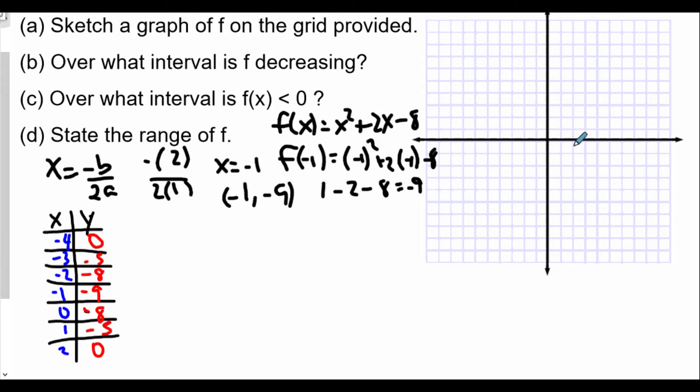Let's plot some points here. I'll use maybe blue. So when x equals -4, one, two, three, four, y is 0. When x is -3, y is -5. One, two, three, four, five. When x is -2, y is -8. So six, seven, eight. When x is -1, y is -9. And then x is 0, y is -8. When x is 1, y is -5. When x is 2, y is 0.